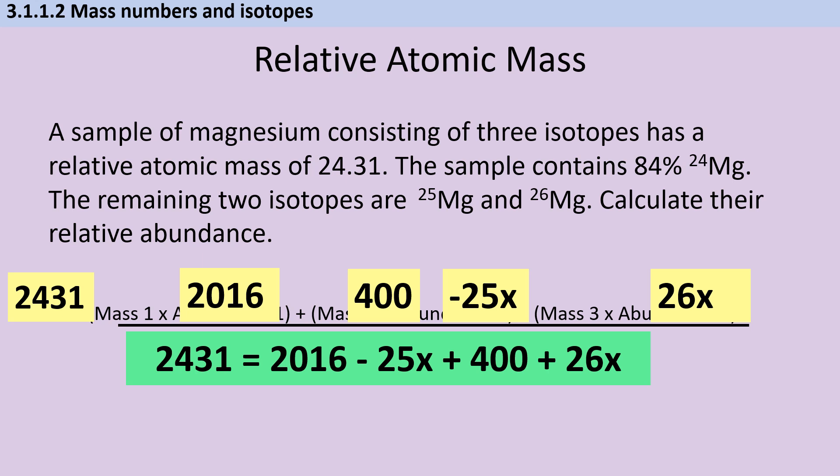So if I take all of that and I simplify it and gather terms together, then what I'm left with is 15 is x. So remember, I then need to actually answer the question, what is the relative abundance of the different isotopes? So I had defined x as being the abundance of the isotope that has a mass of 26, so therefore I've got 15% of magnesium-26, and that leaves me with 1% of magnesium-25.